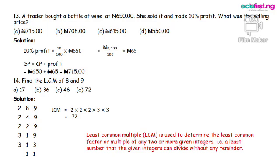2 divided by 4, we have 2. We also bring down the 9. 2 divided by 2, we have 1. We bring down the 9. Now we have finished with 2. Let's use 3.